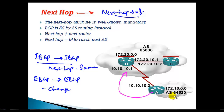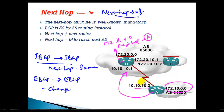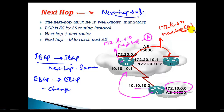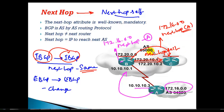For example, router A advertises 172.16.0.0 network to router B. Router B records the next hop as router A's IP address. When router B advertises the same update to its internal IBGP neighbors, the next hop address remains unchanged. To change this behavior within an AS, we use the 'next-hop-self' command, which we covered in previous videos.